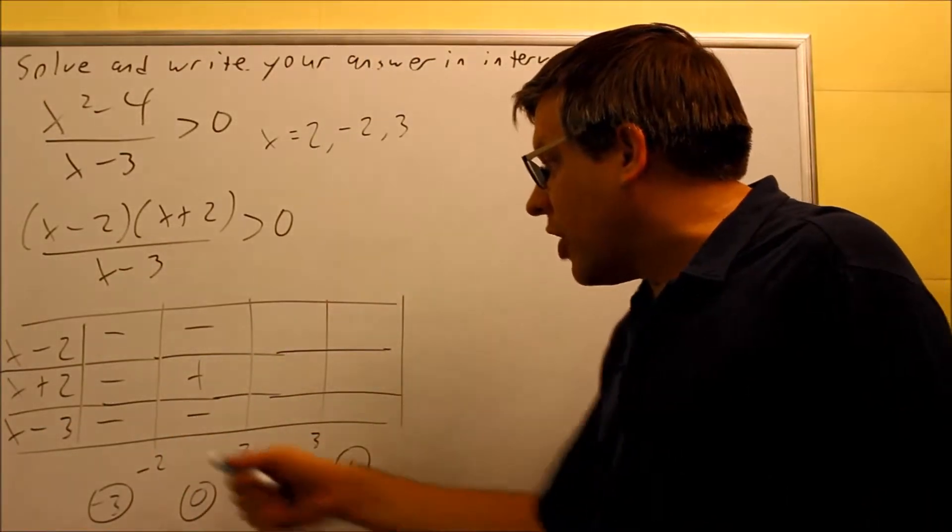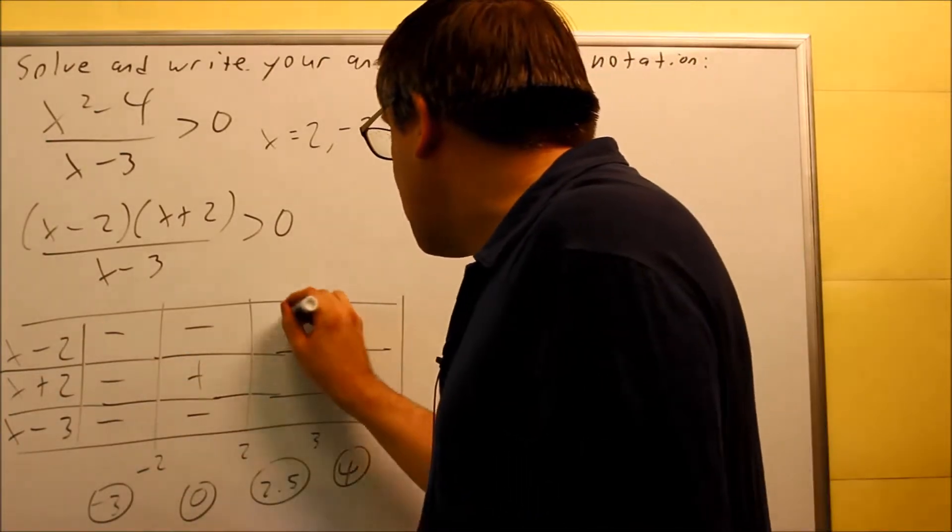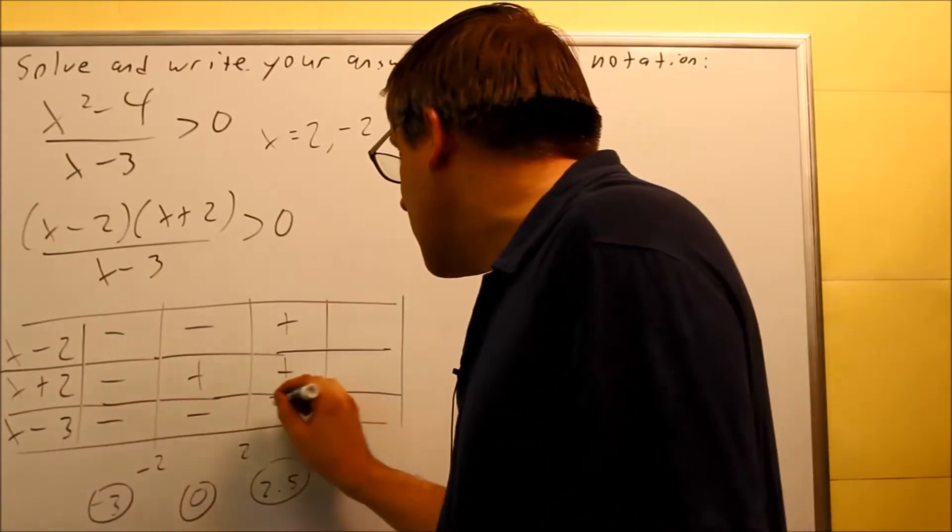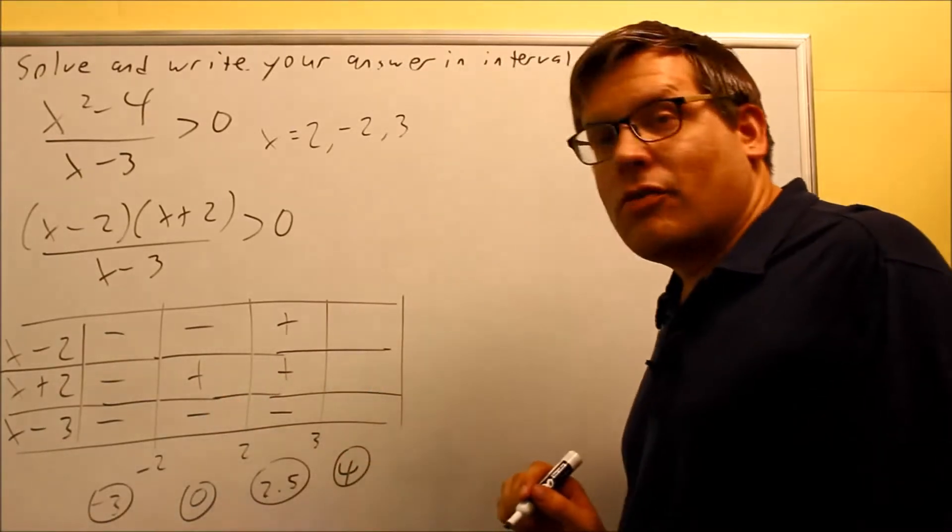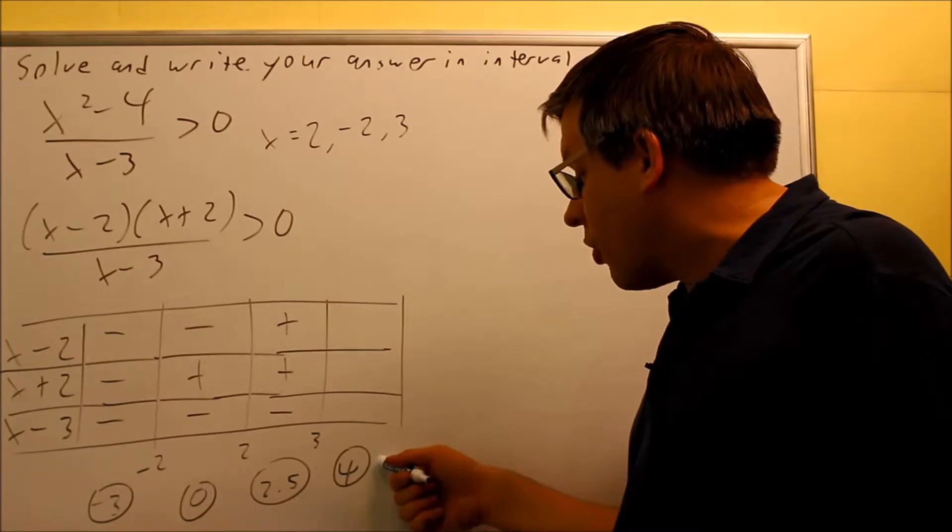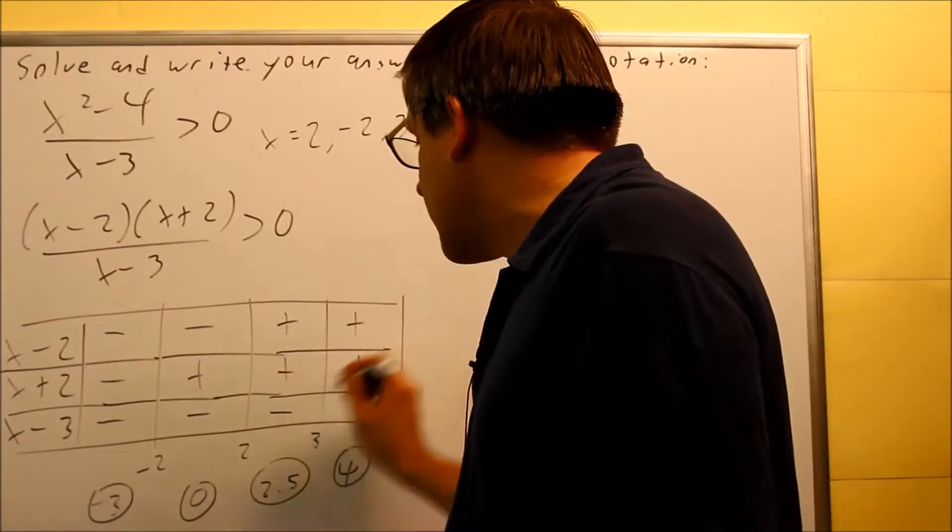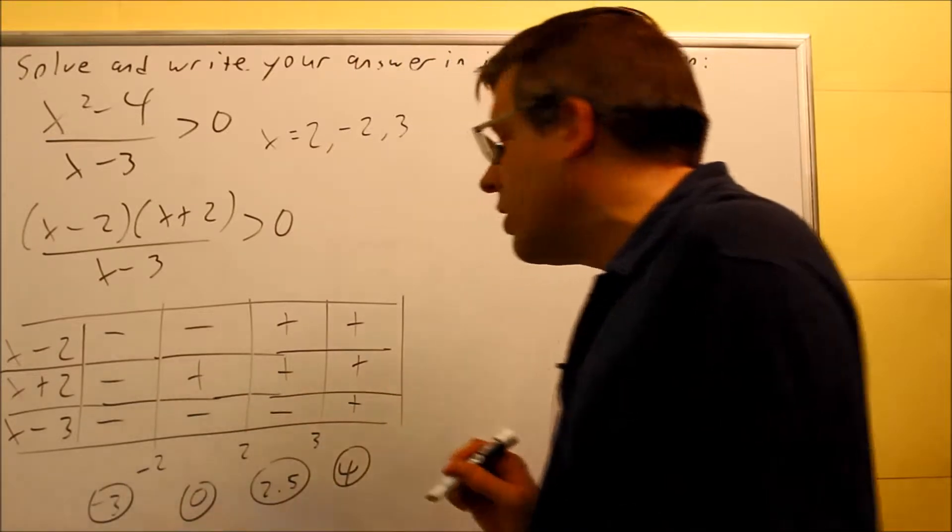Now we're going to use 2.5. 2.5 minus 2, positive. 2.5 plus 2 is positive. 2.5 minus 3, that's going to be negative. The last one, we're going to do 4. 4 minus 2 is positive. 4 plus 2 is positive. 4 minus 3, all those are going to be positive.